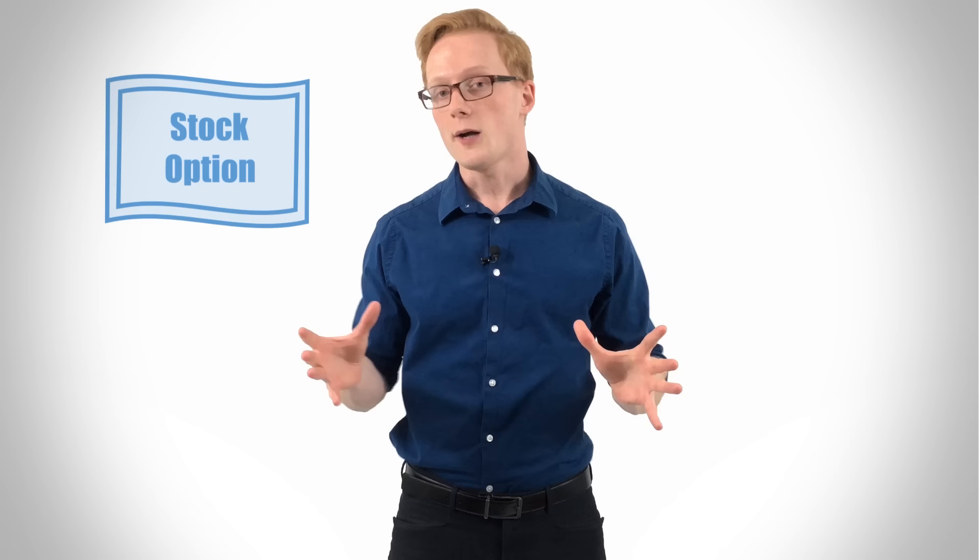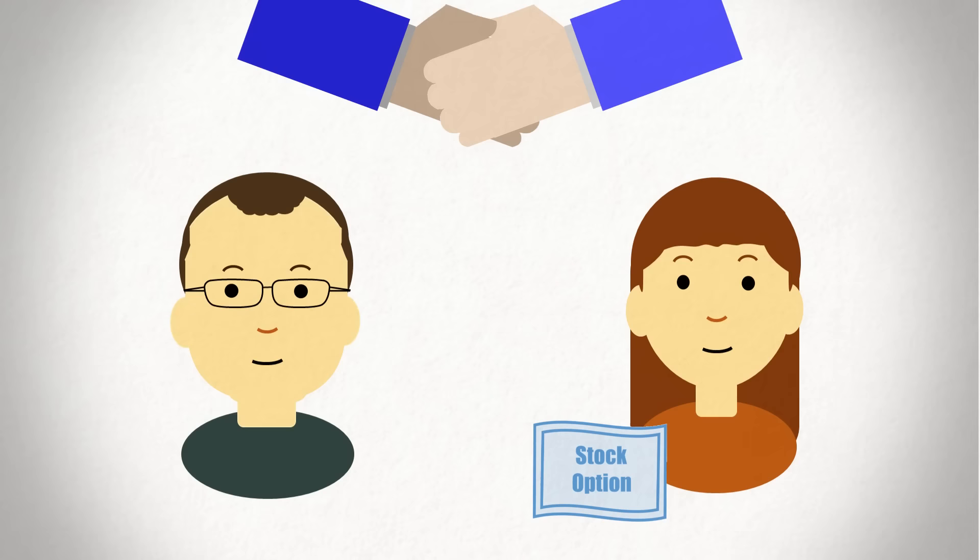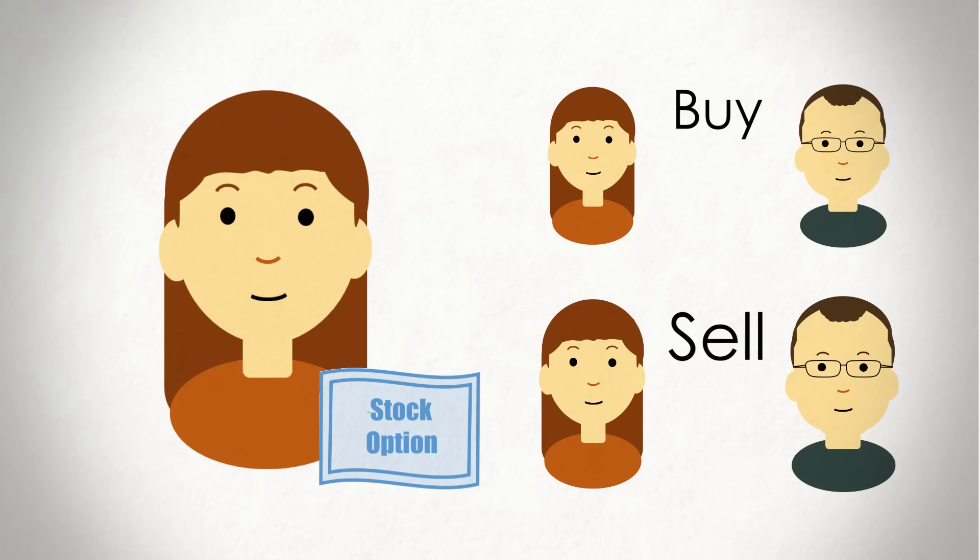Options, like the broader derivatives category, are also pretty self-explanatory. An option is a security sold from one investor to another that represents an agreement between the two parties. The buyer of the option pays a premium to the option writer. In exchange for the payment, the buyer is given the right, aka the option, to buy or sell a specified investment from or to the other party at a predetermined price at some point in the future.